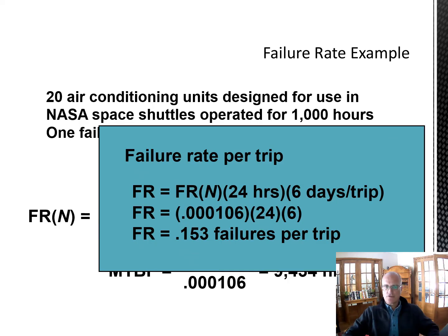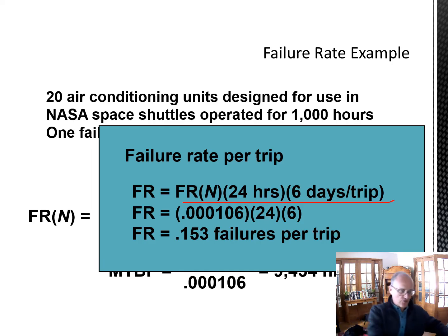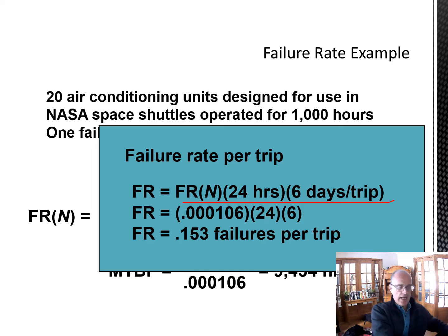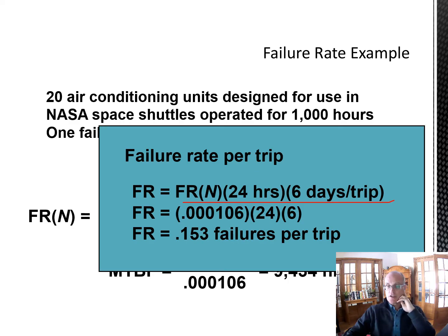The failure rate per trip is FRN times 24 hours times 6 days per trip: 0.000106 × 24 × 6 = 0.153 failures per trip. So in just over 15% of trips we would expect a failure of that unit, which means we would want to build some redundancy in to reduce the probability of that happening.